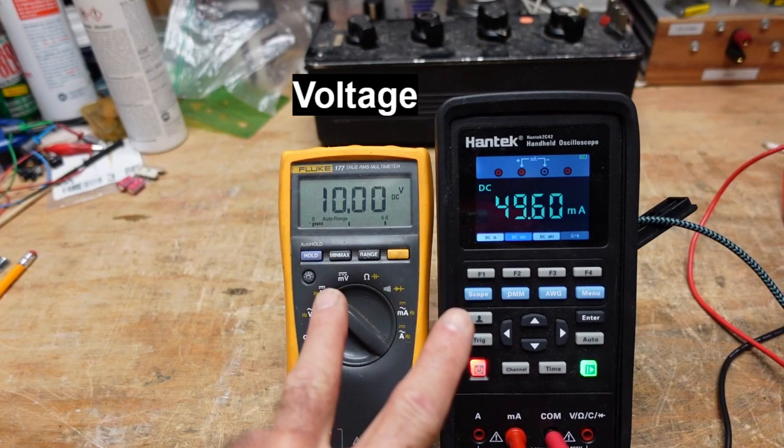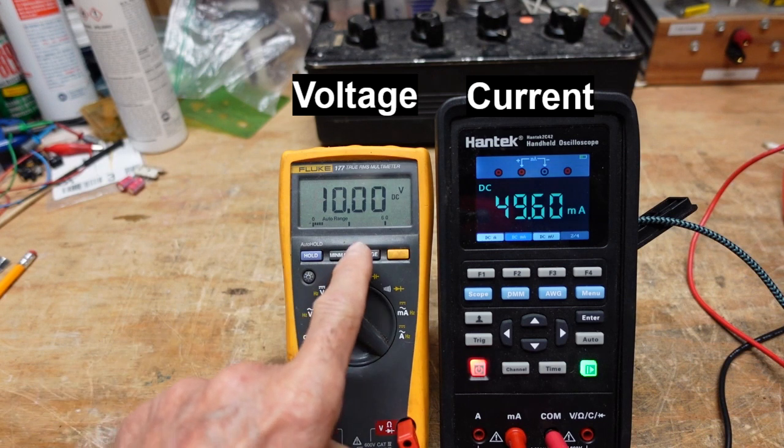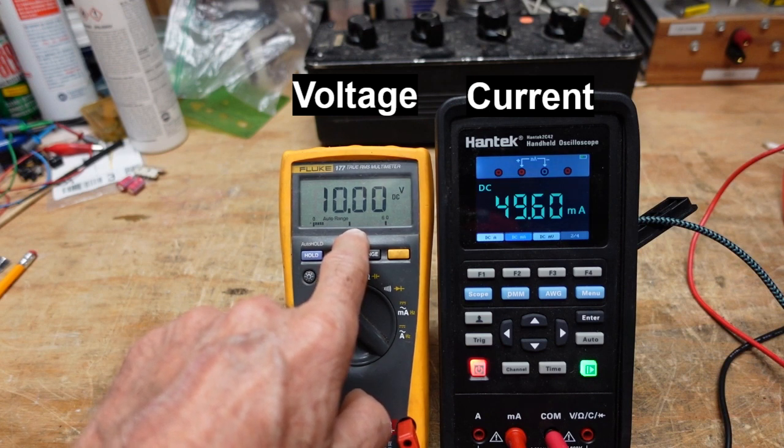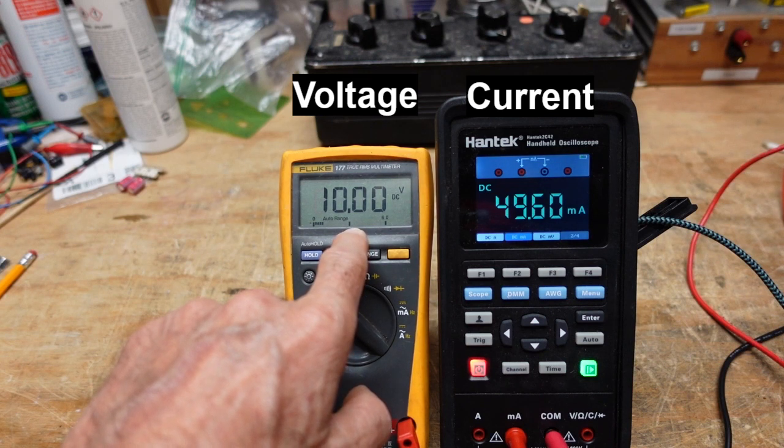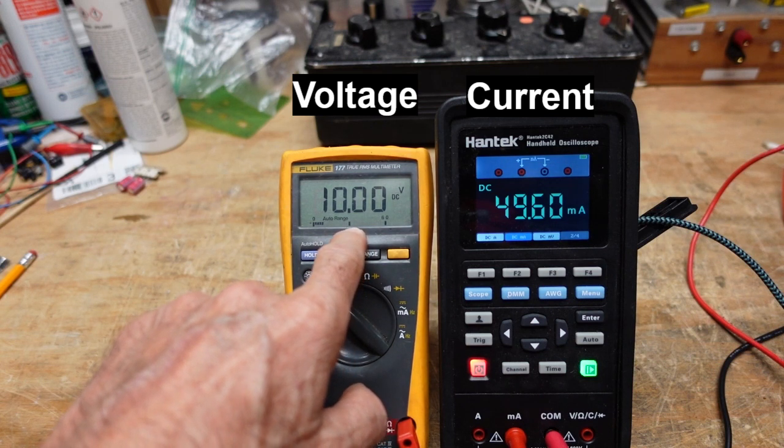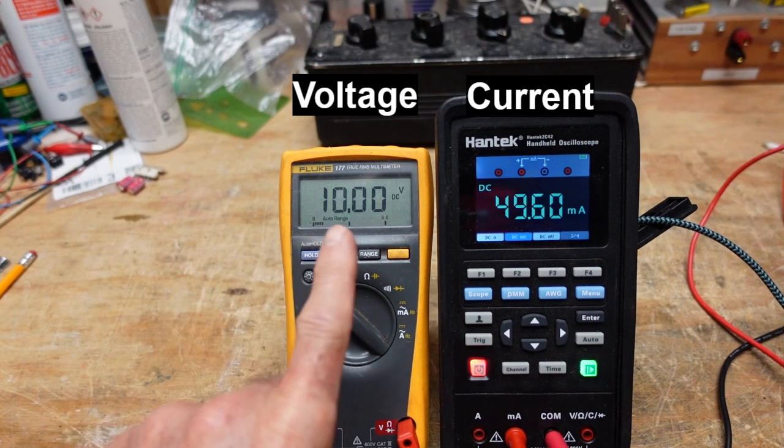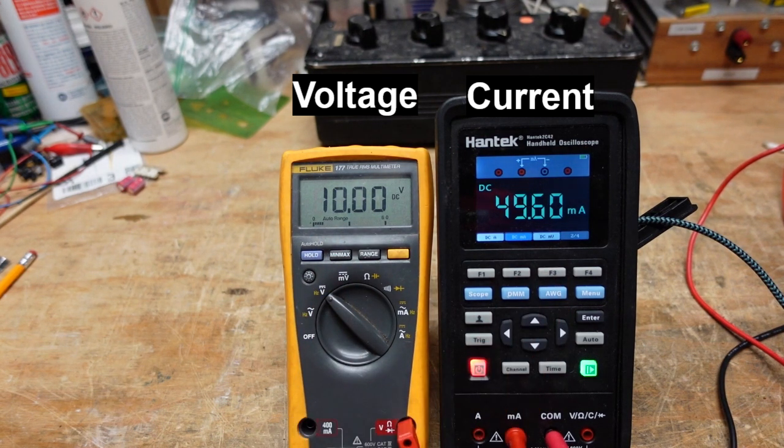I have two meters set up here on the bench. The first meter, the Fluke on the left, is reading the output of a DC power supply, which is exactly 10 volts. I have a resistor in the circuit, and we are measuring 49.6 milliamps flowing through the circuit. I'm going to put a quick graphic of that circuit up so you can see what we have here.